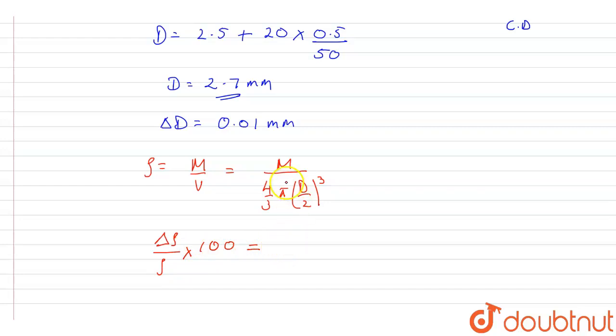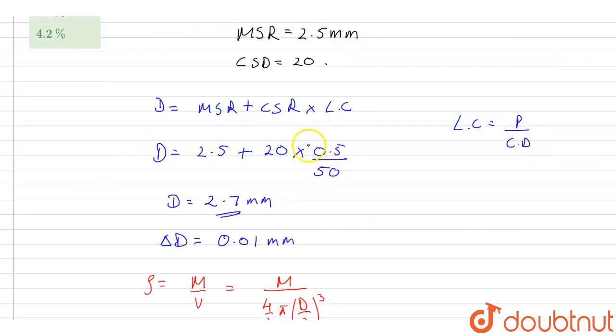This will be equal to delta m upon m into 100 plus 3 delta d upon d multiplied by 100. And in the question we are given 2 percent.